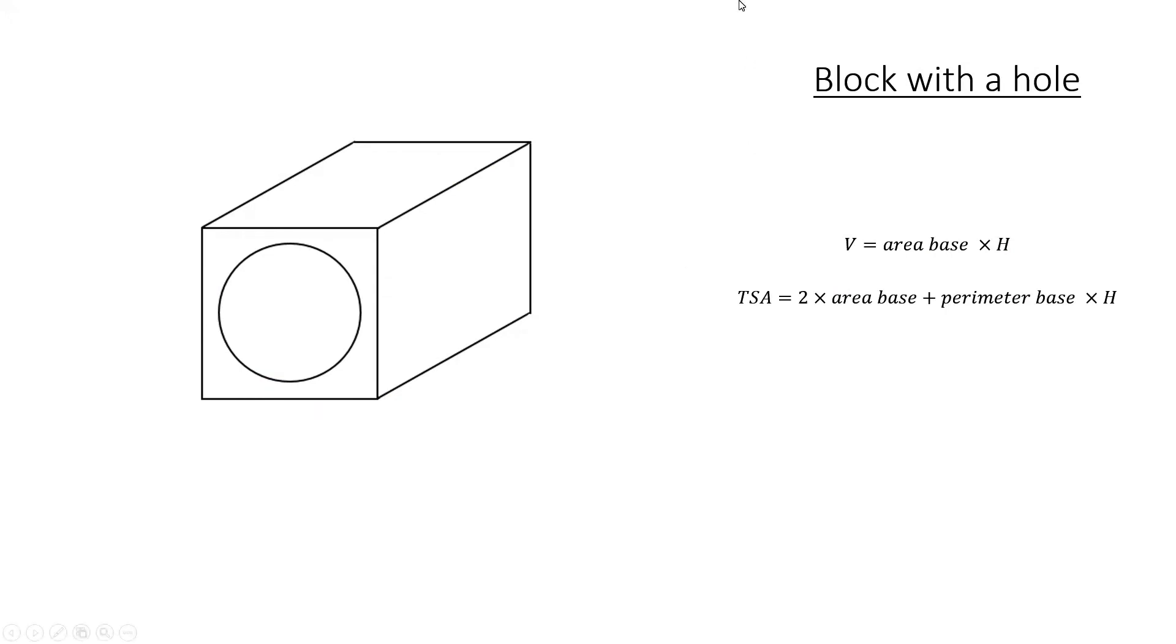So, what we're looking at here is a block, I'm going to use a square here, with a hole drilled right the way through it. So, we're going to start off with our same standard general formulas, volume equals area of base times height, and total surface area is two times area of base, plus perimeter of base times height.